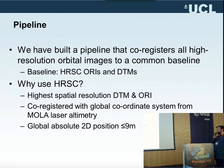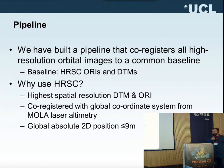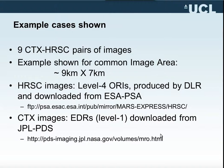We have built a pipeline that co-registers all high resolution orbital images to a common baseline, and we used as a baseline the HRC Oris and DTMs. We used HRC because it has the highest spatial resolution DTMs and Oris and they are co-registered to MOLA. In this talk I'm going to give nine CTX to HRC example pairs of images, each covering an area of 9 km by 7 km. The HRC images are downloaded from PSA and the CTX from PDS.